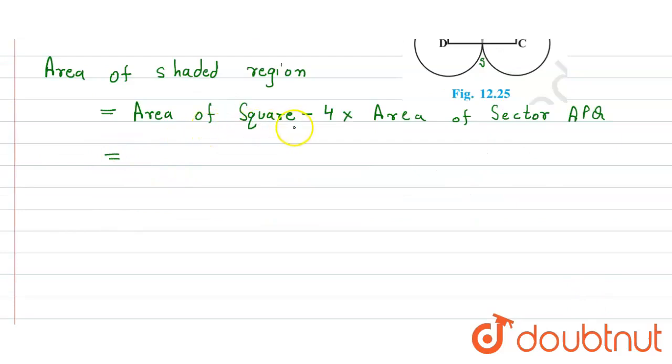So the area of square is equal to side square minus 4 into area of sector. We know that is theta divided by 360 degree into pi r square.